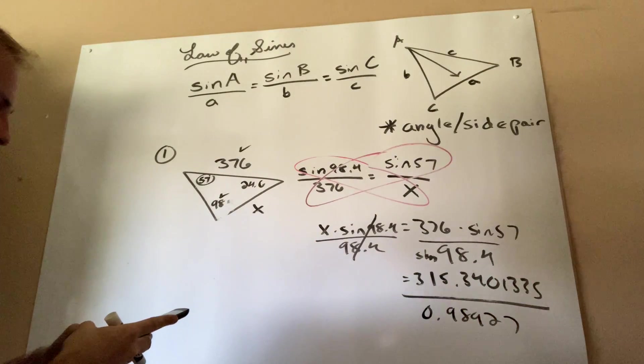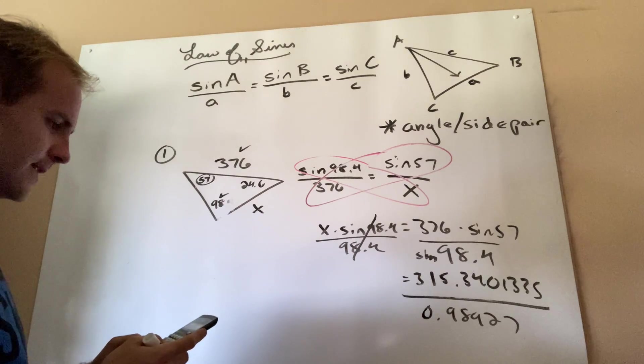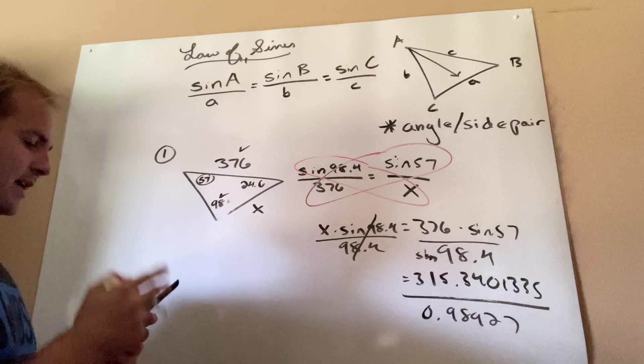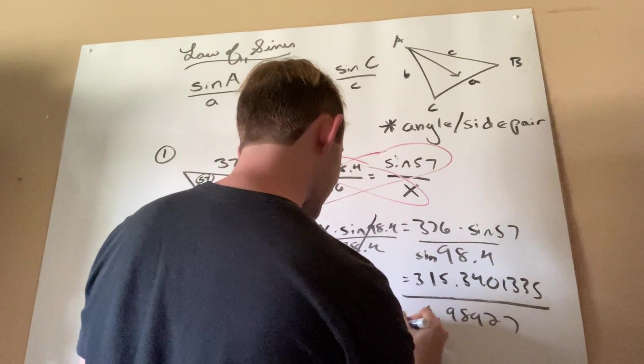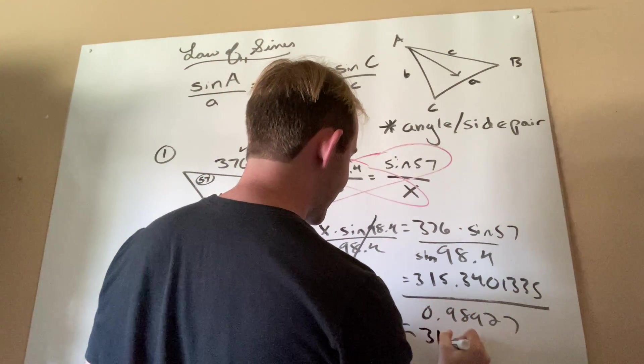At last, so many decimals. I'm just going to do the division here. 0.98927. And lo and behold, guys, I get around 318.8.